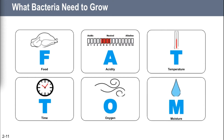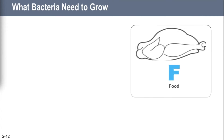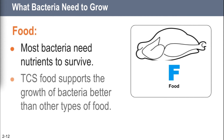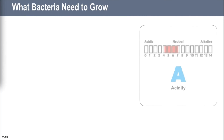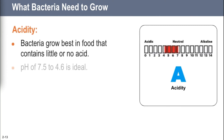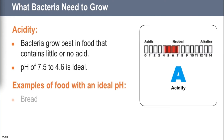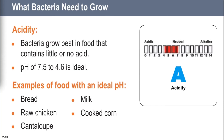The first FAT TOM factor is Food — bacteria need it to grow, though we won't get into the specifics of carbohydrates and proteins. Acidity: bacteria want food that is almost neutral and slightly acidic, just under a pH of 7. Foods they don't like include lemons, limes, tomatoes, and mayonnaise — very acidic. But milk and raw chicken? Bacteria are setting up a tent in those.